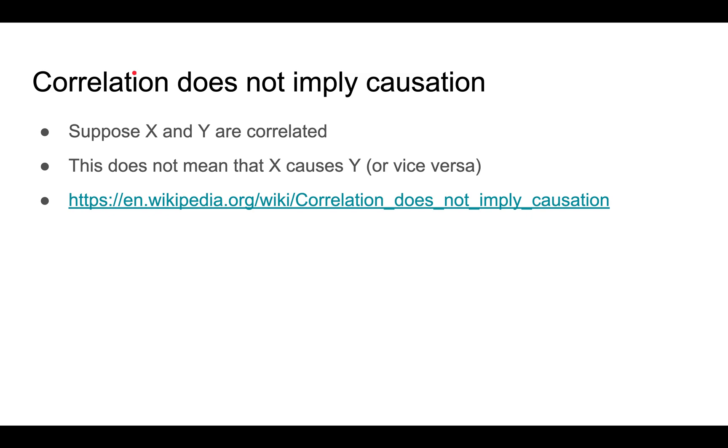A very important principle of statistics is this famous saying that correlation does not imply causation. It is so famous that there's an entire Wikipedia article about it. The main idea is that if two variables are correlated, it does not mean that X causes Y or Y causes X.